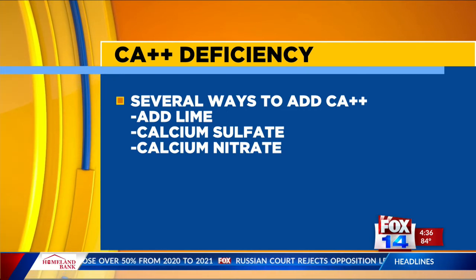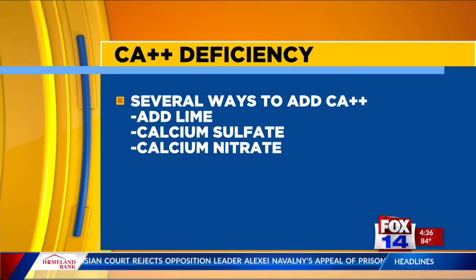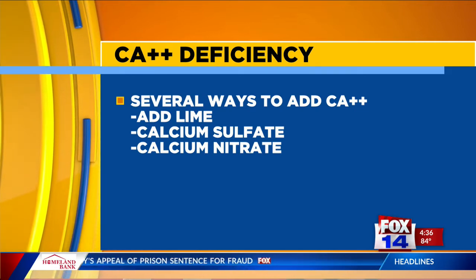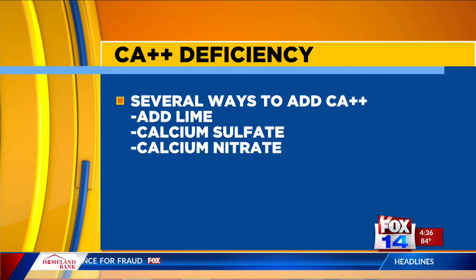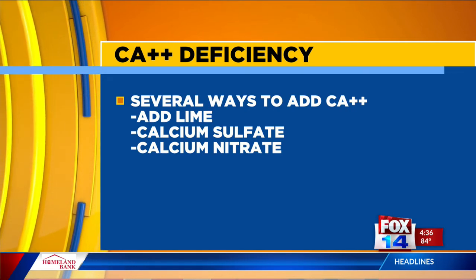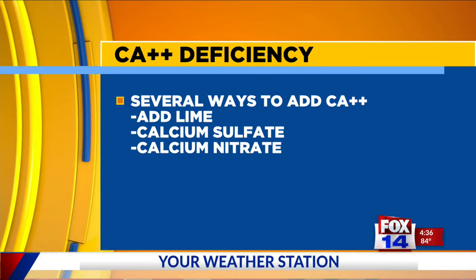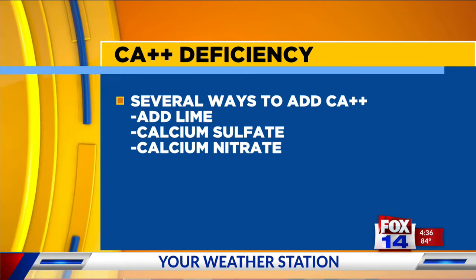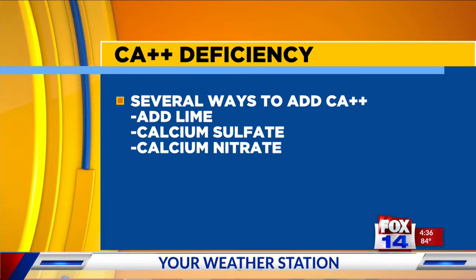There are several ways to add calcium if it is at insufficient levels in your soil. You can add lime — calcium carbonate — but be careful because lime will raise the pH of your soil, which may be too much for tomatoes. You can also add non-liming agents that still contain calcium, such as calcium sulfate or calcium nitrate, which we recommend side dressing with about every three weeks.